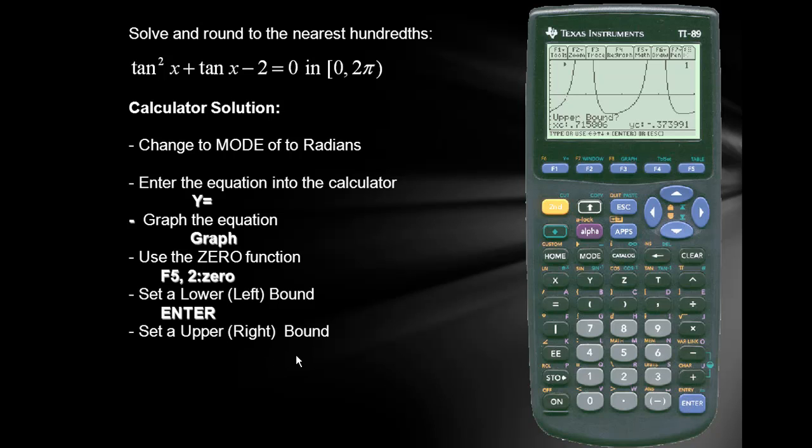We'll now ask for an upper or a right bound. So I'll move my cursor to the right of the zero. I'll set that in. We'll press enter. And we have our first x-intercept of 0.79. To find our second intercept we'll simply repeat the process.